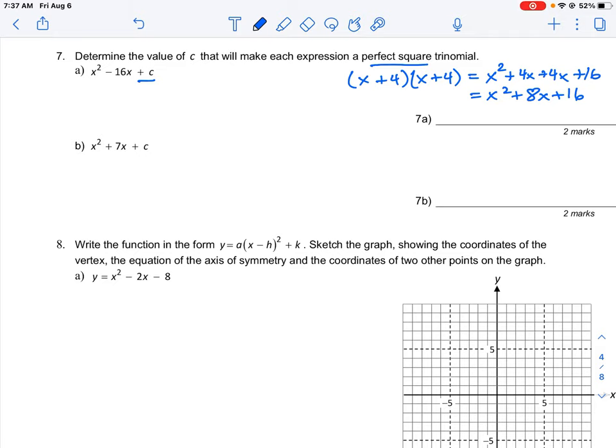So this trinomial x squared plus 8x plus 16 is a perfect square trinomial because it can be factored into the product of two of the same expressions, in this case x plus 4.